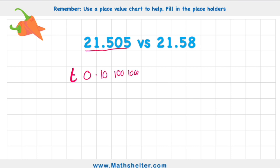21.505 would be 21.505. Or in other words, 21 and 505 thousandths. And now I have 21.58. 21.58. But again, I have this gap that's going to get filled with a placeholder. So in other words, I have 21 and 580 thousandths.